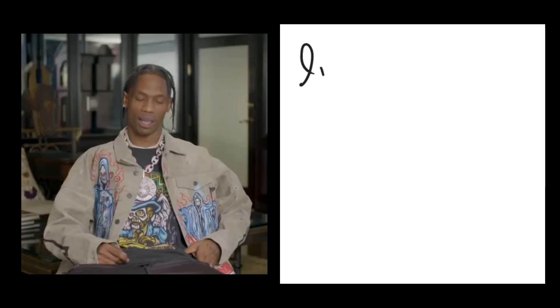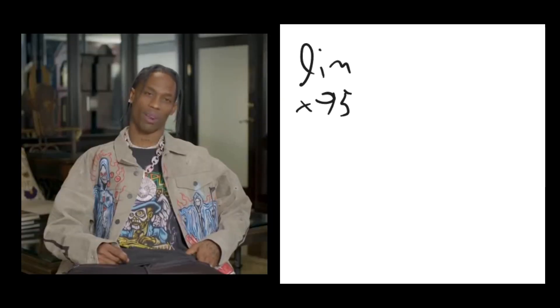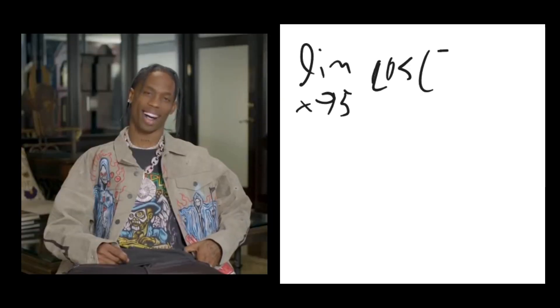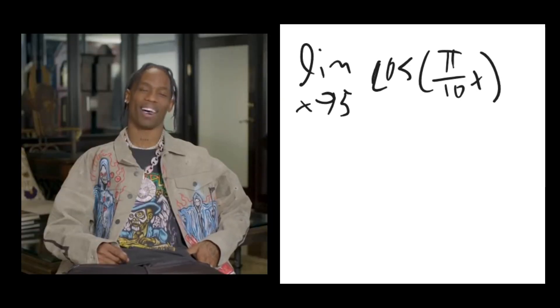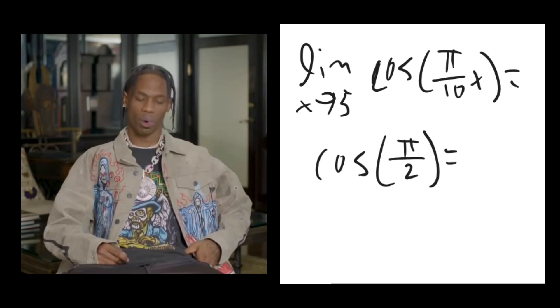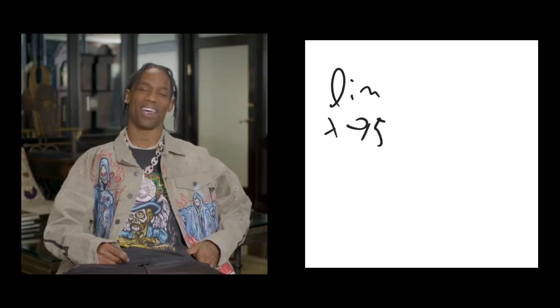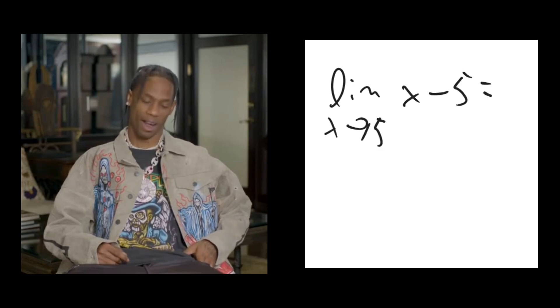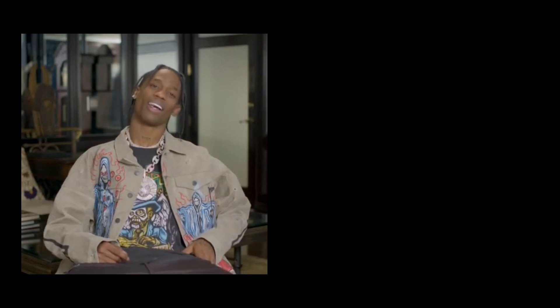So that applies here, because if we plug 5 into the top, we get cosine of pi over 10 times 5, which is cosine of pi over 2, or 0. And on the bottom, 5 minus 5 is also 0. So we have 0 over 0.